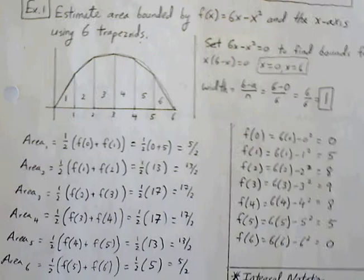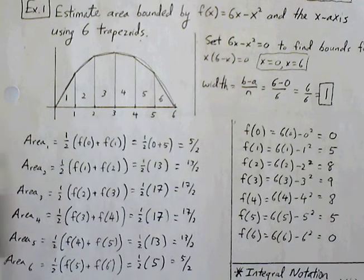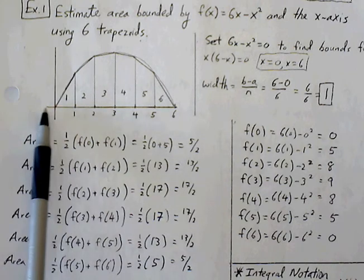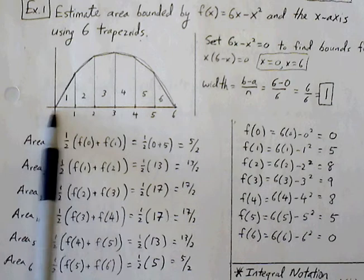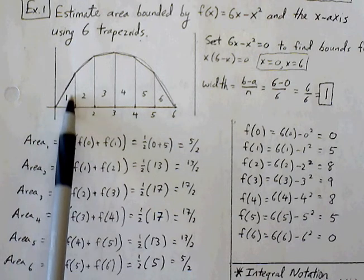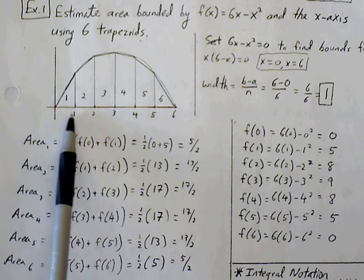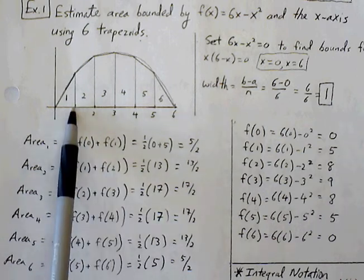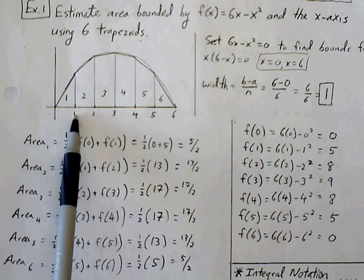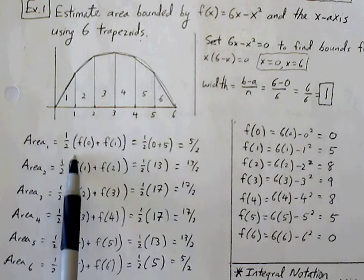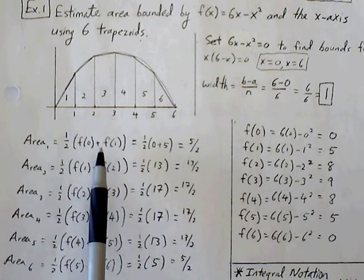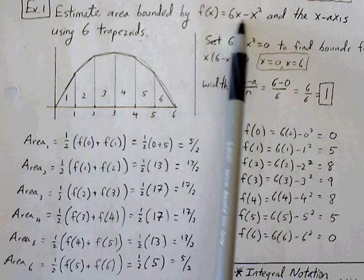So now we're simply just going to find the area of each of our trapezoids. So for my first trapezoid, this is really a triangle, but we can still use a trapezoid formula. It's base over 2, or width over 2. My width is 1, so 1 over 2 times f of 0 plus f of 1. The height for my first trapezoid is going to be f of 0, and the height, the h sub 2 for my first interval is going to be f of 1. And that's simply going to be f of 0 is 0, and f of 1 is 5. I'm simply plugging all this into our function 6x minus x squared.